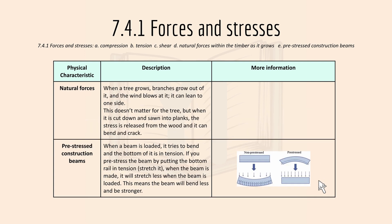Natural forces occur as the tree grows: branches grow out of it and wind can cause it to lean to one side. This doesn't matter for the tree, but when it is cut down and sawn into planks, the stress is released from the wood and it can bend and crack.